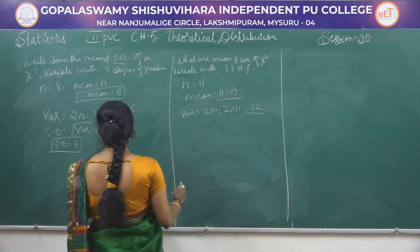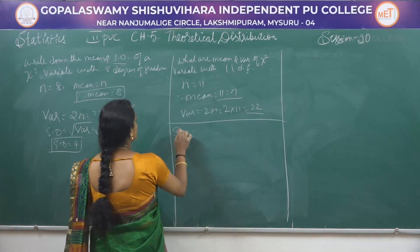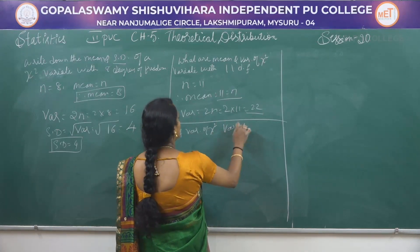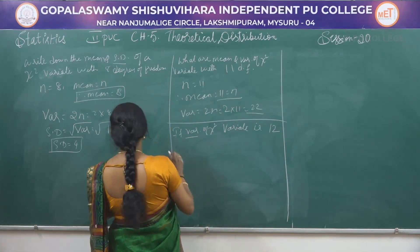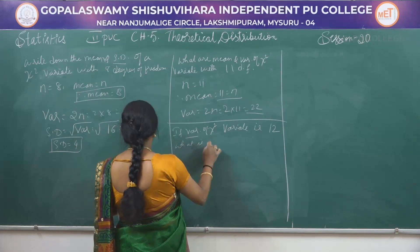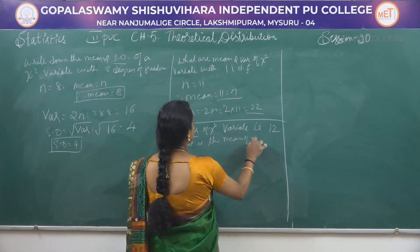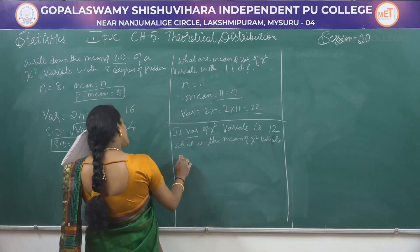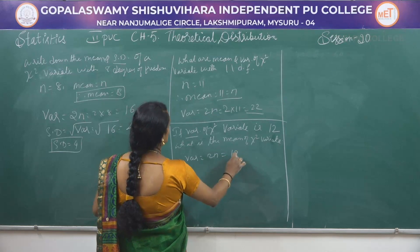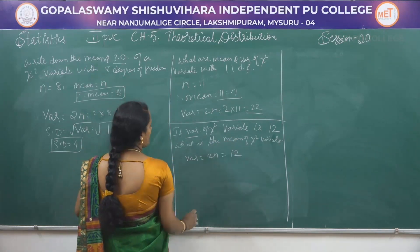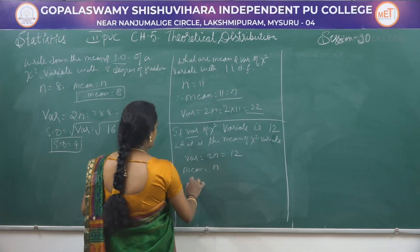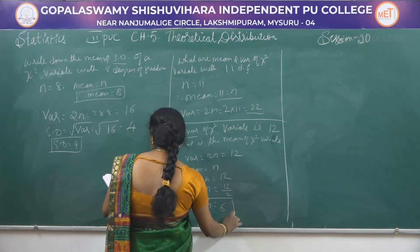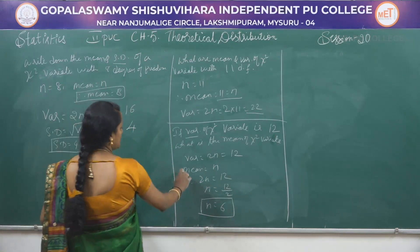Problem: If the variance of a chi-square variate is 12, what is the mean? Variance = 2n = 12, so n = 12 / 2 = 6. Since mean = n, mean = 6.